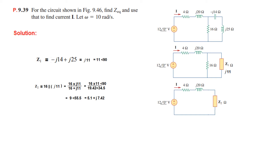Converting back into rectangular form, we find Z2 equals 5.1 plus j7.42.